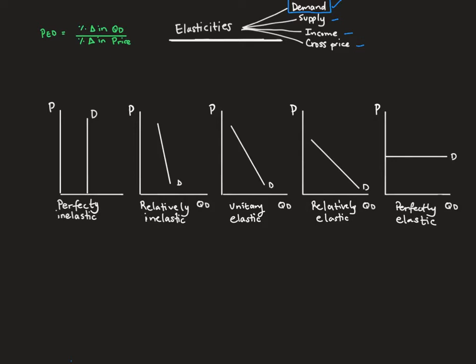For this video, we're interested in the relationship between price and quantity demanded, or consumption. When price increases, quantity demanded decreases, and when prices decrease, quantity demanded should increase. So we have a negative relationship between the two. What elasticities allow us to do is calculate the sensitivity of a price change and how it affects our consumption pattern.